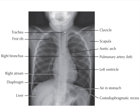This is the radiology of the chest. This is the trachea, this is the first rib, this is the clavicle, this shadow is for the scapula, and here is the aortic arch.